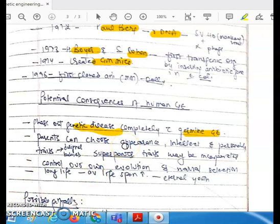Second, parents can choose appearance and many traits in their children, like appearance, intellectual, and personality traits. That is a designer baby. Parents are able to choose the physical traits or other traits. But that may create superpower traits that could be incorporated by using human genetic engineering.